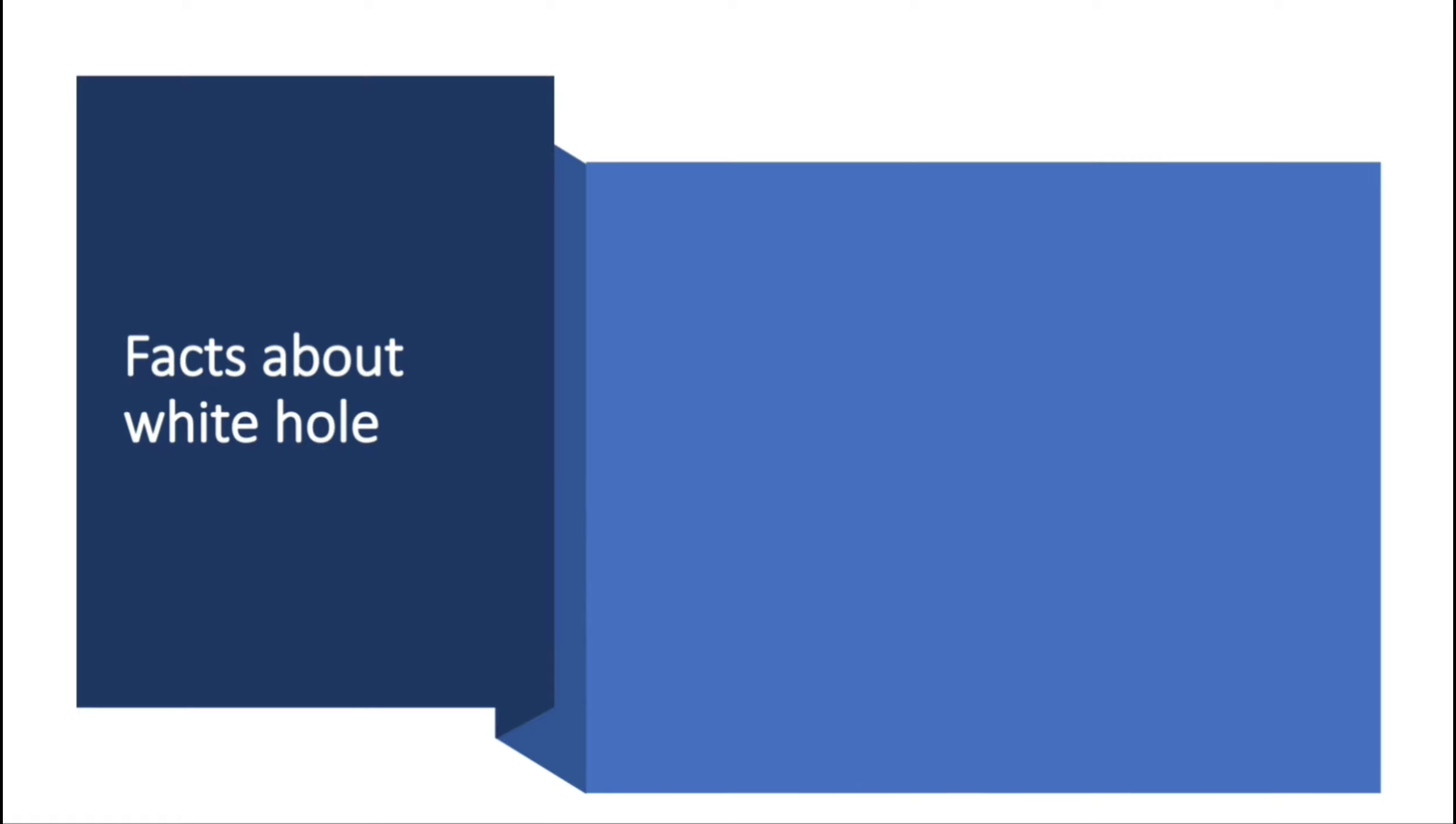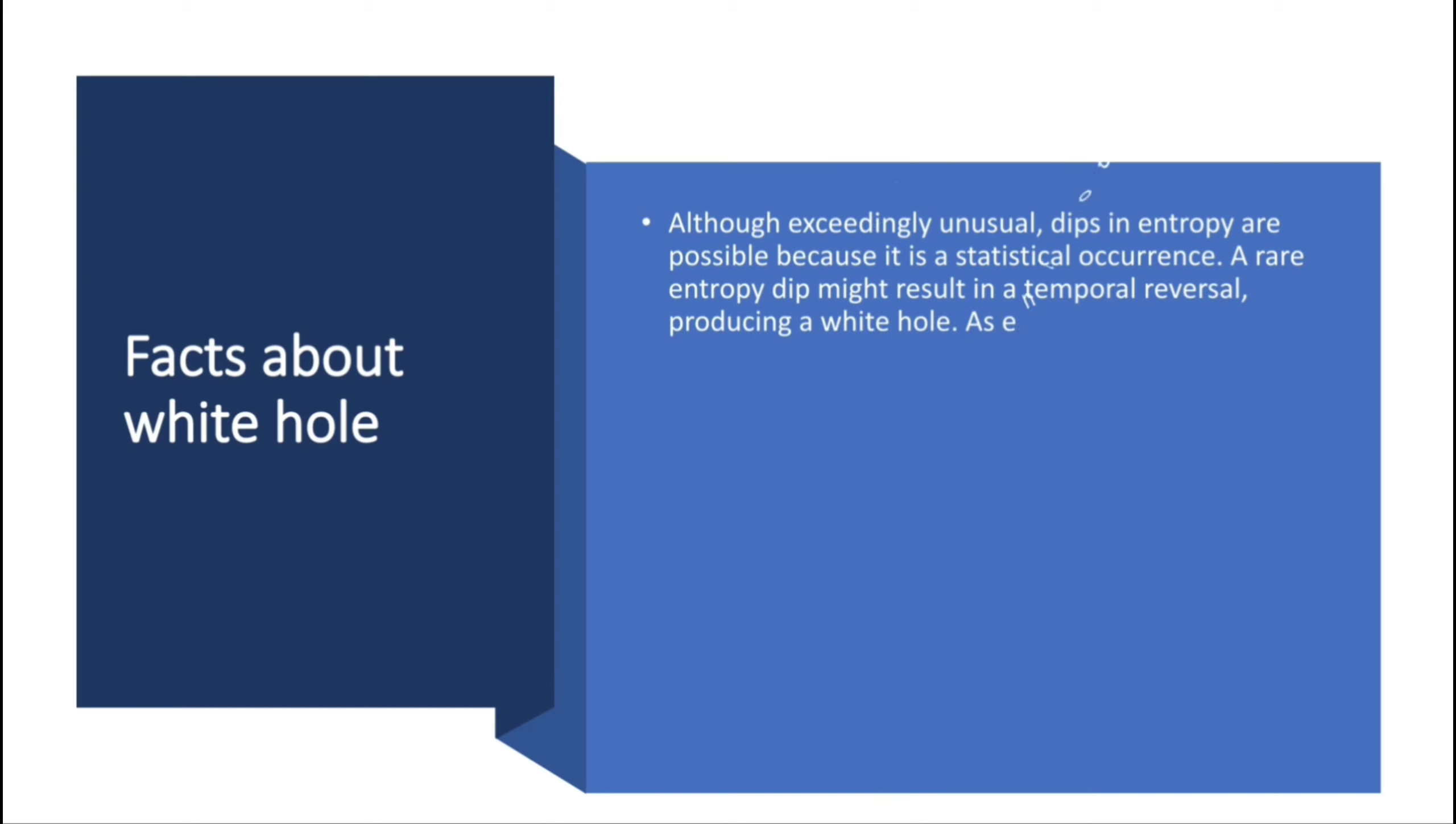Facts about white hole. Although exceedingly unusual, dips in entropy are possible because it is a statistical occurrence. A rare entropy dip might result in a temporal reversal, producing a white hole. As entropy and time resume their regular flow directions, the white hole would blast outwards, causing something like the Big Bang, both mathematically and conceptually.